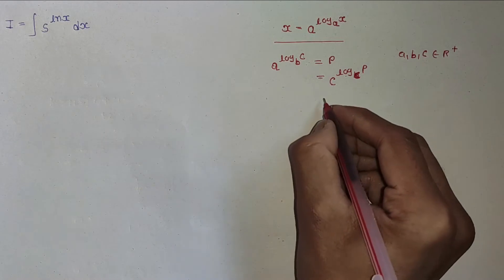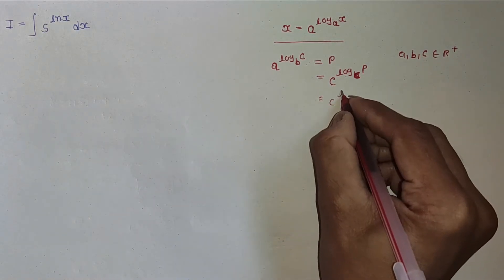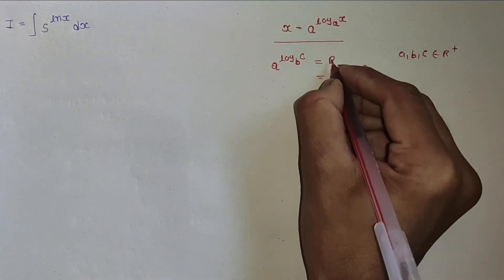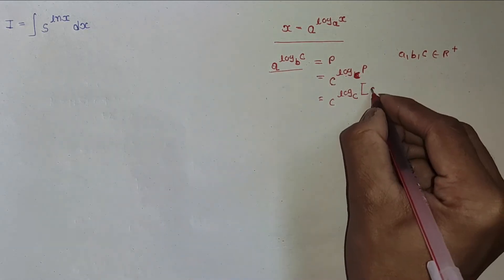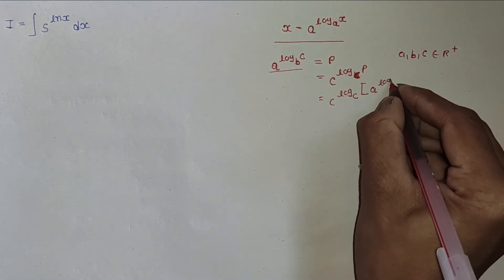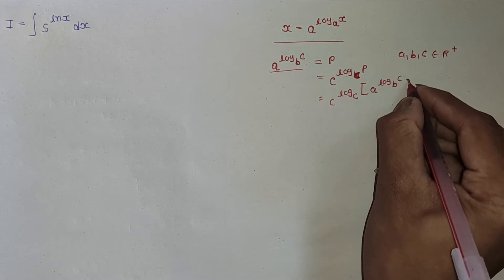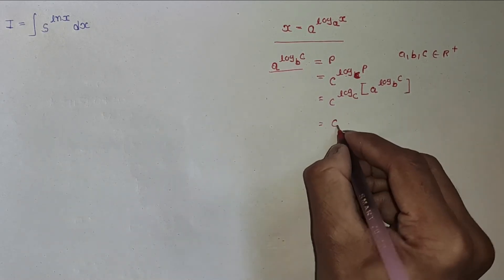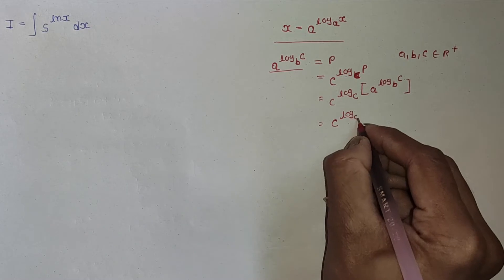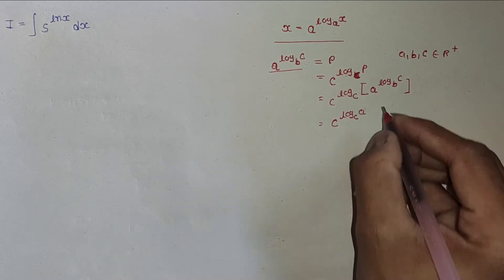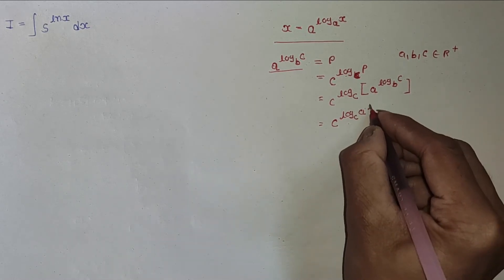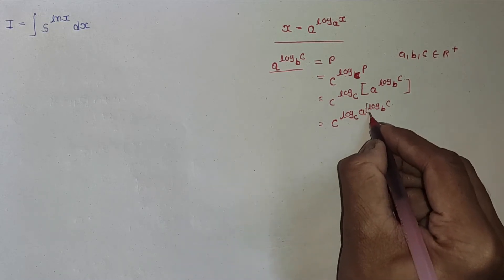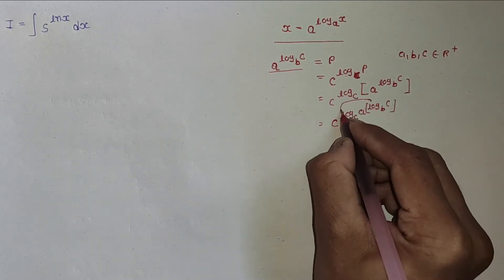We get c^(log_c [a^(log_b c)]). Now log_b c comes forward, giving us c^(log_b c · log_c a).